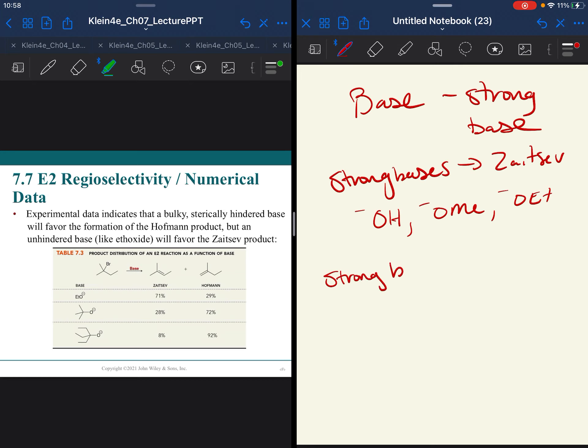For strong bases that give Hofmann, it's going to be something called a strong bulky base. And that will give you the less stable, less substituted Hofmann product. And there is only one bulky base that I require you to know, and that is tert-butoxide.